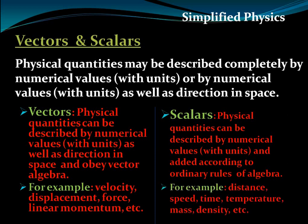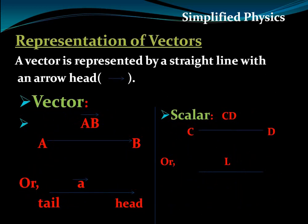A vector can be represented by a straight line with an arrow, or alphabets with an arrow head. It has a starting point called the tail or initial point, which has no arrow, and a terminal point called the head, which has an arrow. In the case of a scalar, there is no arrow, so no initial or terminal point — scalars are represented by alphabets only or a straight line without an arrow head.